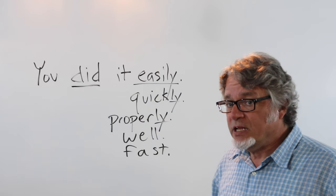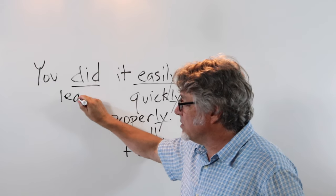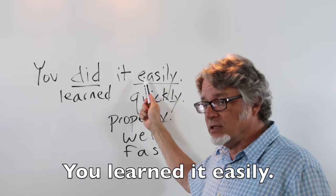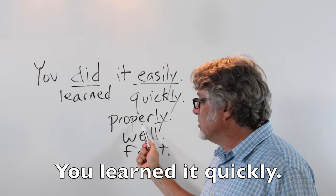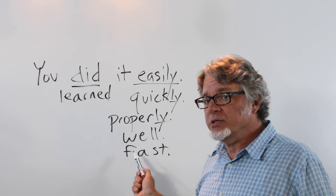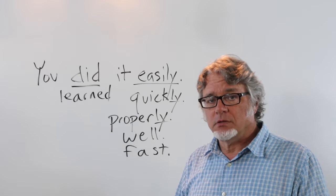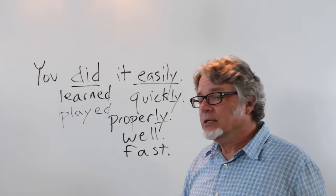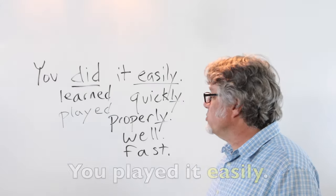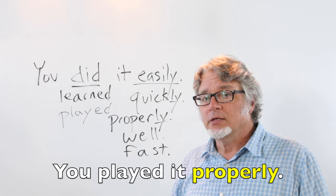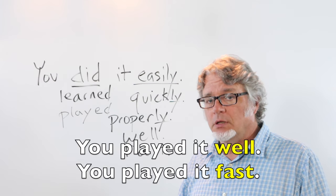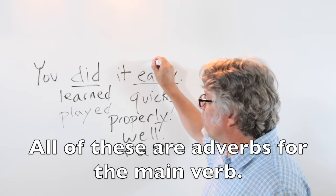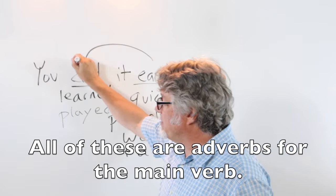The verb 'did' can be replaced with other verbs. Using 'learn' in the past tense: you learned it easily, you learned it quickly, you learned it properly, you learned it well, you learned it fast. Or using 'play' in the past tense: you played it easily, you played it quickly, you played it properly, you played it well, you played it fast. All of these are adverbs for the main verb.